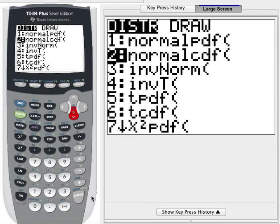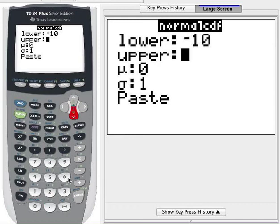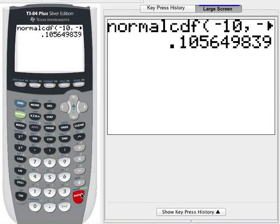So here is the normal cdf command, lower boundary of negative 10, anything lower than that would be fine. The upper boundary then is the negative 1.25.